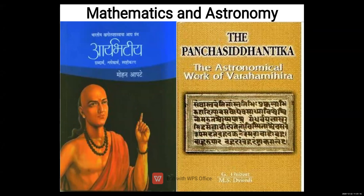In mathematics and astronomy, zero was invented by the Indians. Because zero was invented, the decimal point system was developed and used all over the world. The concept of units, tens, and hundreds also came after the invention of zero.